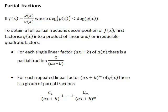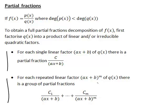In this second example we are going to have a look at a case where we have both a single linear factor and a repeated linear factor. For single linear factors they correspond to a partial fraction of the form: a constant divided by the linear factor. Whereas when we have a repeated linear factor, that is a factor to the power of m, it will be a constant divided by the factor to the power of 1, plus another constant divided by the factor squared, continuing up to a constant divided by the factor to the power of m.